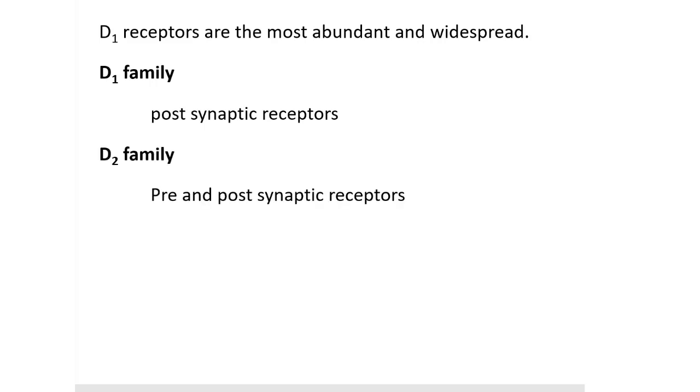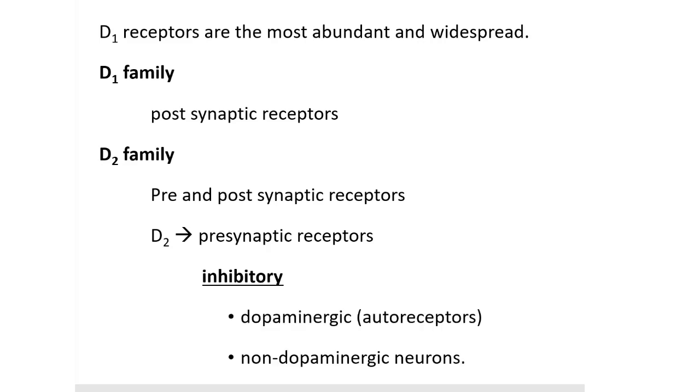Among the dopaminergic receptors, D1 receptors are the most abundant and widespread. The D1 family consists of mostly post-synaptic receptors whereas D2 family consists of pre- as well as post-synaptic receptors. D2 are exclusively pre-synaptic receptors which are inhibitory in nature. These inhibitory receptors are located on dopaminergic as well as non-dopaminergic neurons.